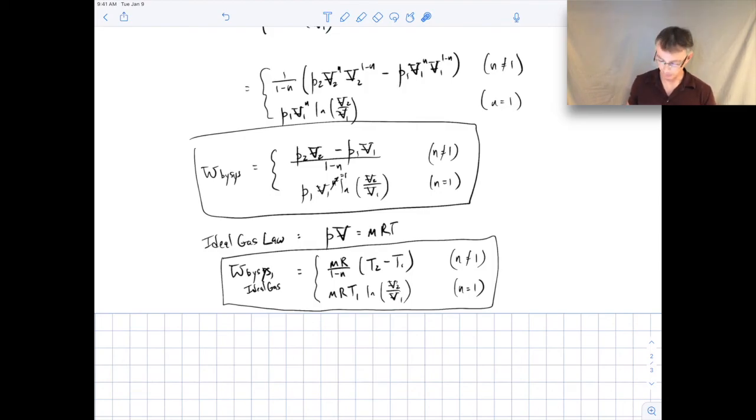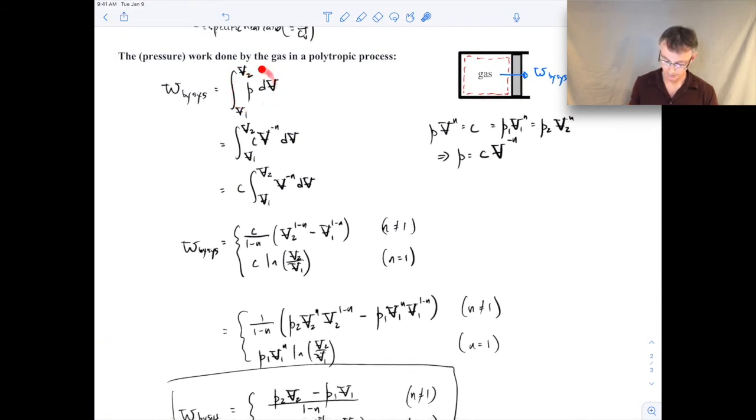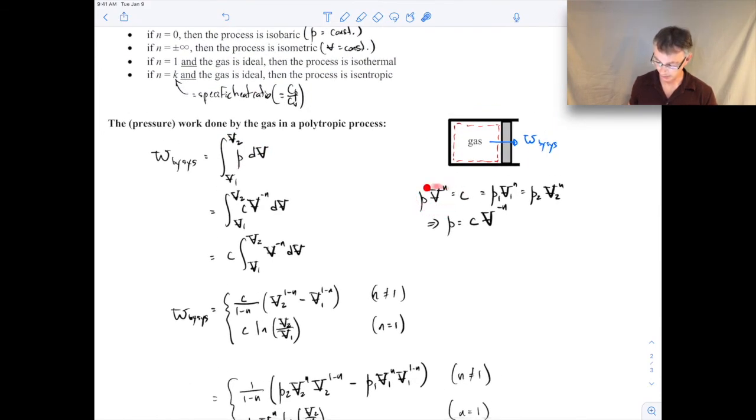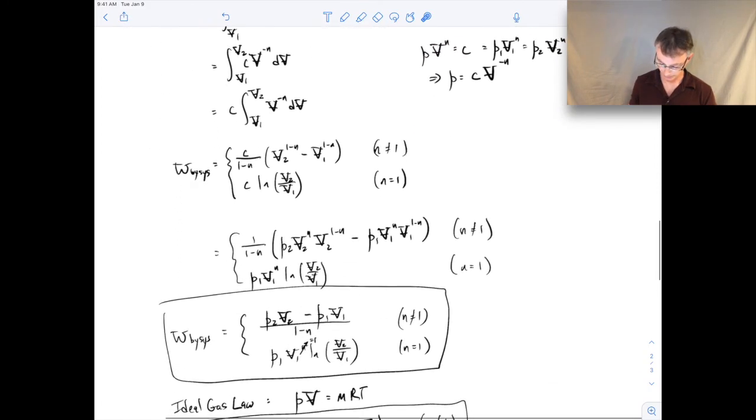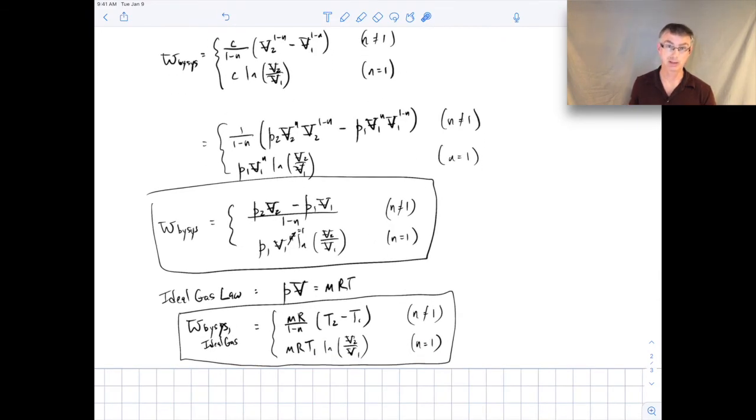And again, I wouldn't worry about memorizing these formulas. All you need to do is just go back to the idea of the pressure work being integral PDV, knowing how to deal with the PV to the N equals a constant. And then if it's an ideal gas, you can just make use of the ideal gas law as well. But I just wanted to show you how you could do these calculations to figure out the work done during these different polytropic processes.